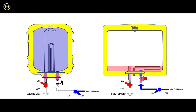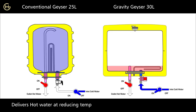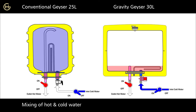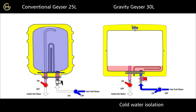Now let us understand the pros and cons of the two different principles. A conventional storage geyser delivers hot water at reducing temperature, whereas our gravity storage geyser delivers hot water at constant temperature. In a conventional storage geyser, electricity is wasted due to mixing of hot and cold water, whereas in our gravity storage geyser there is a comparative saving of up to 35 percent due to cold water isolation.